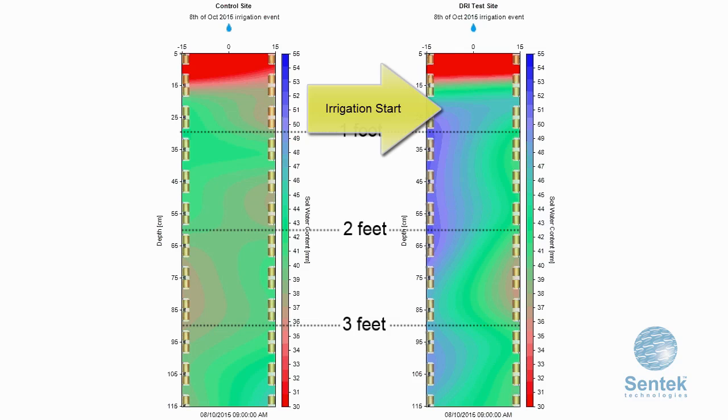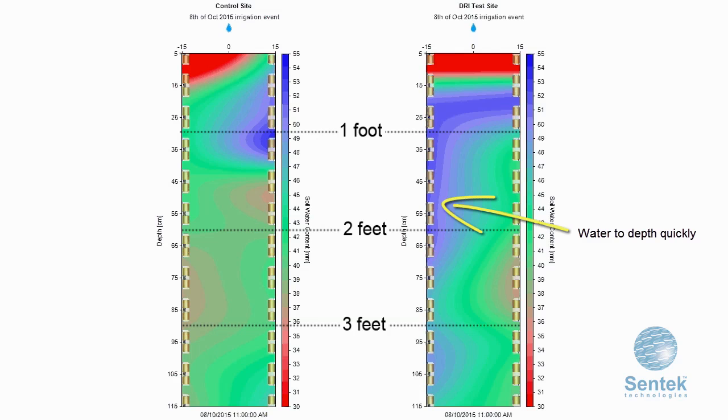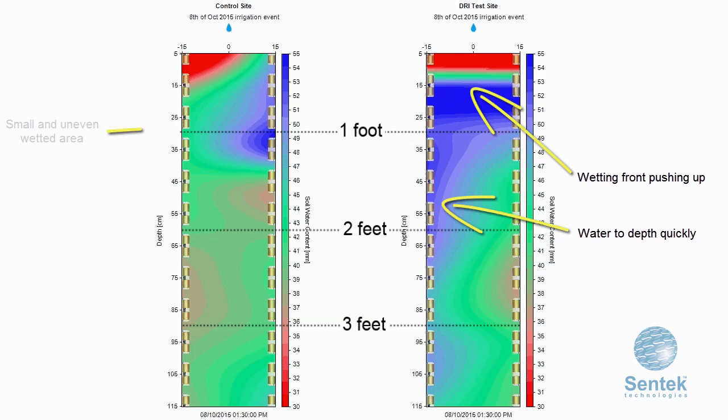Straight away on the test site, water gets down deep, and you can see the water pushing up towards the surface. On the control with surface drip, you can see a more uneven wetting pattern and water not getting down as deep into the soil profile.